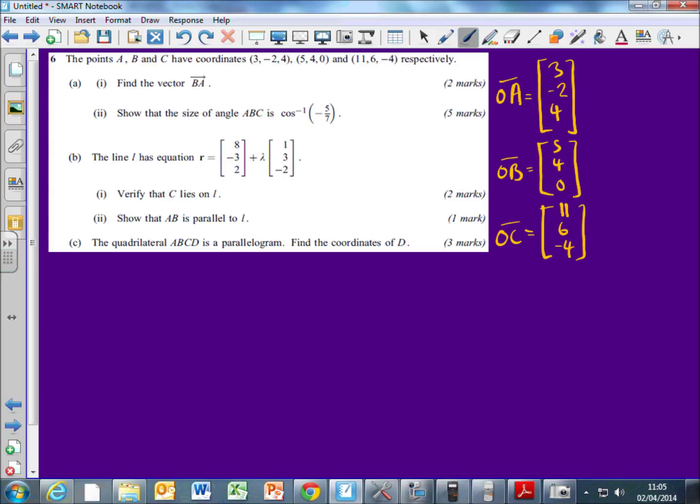Okay, so the first question is, we want to find the vector B to A. So can someone talk me through how I do that? How are we going to find the vector B to A? Yeah, it's O to A, take away O to B.